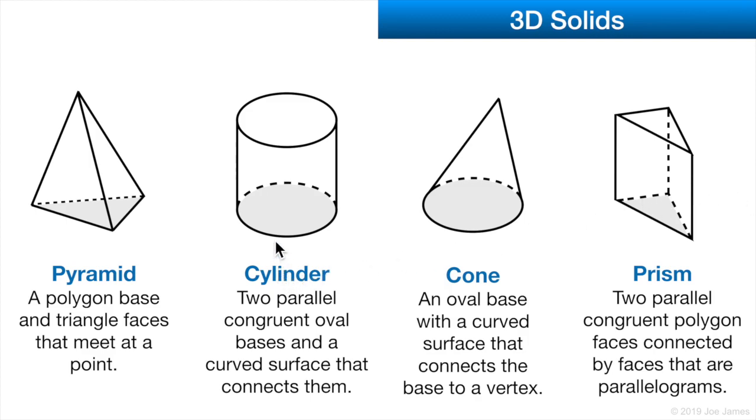Cylinders and cones are both circular in shape, round or oval, and pyramids and prisms both have a polygon-shaped base. Another thing you'll notice is that both pyramids and cones come to a point, and both cylinders and prisms have two bases, a lower base and an upper base, that are parallel.